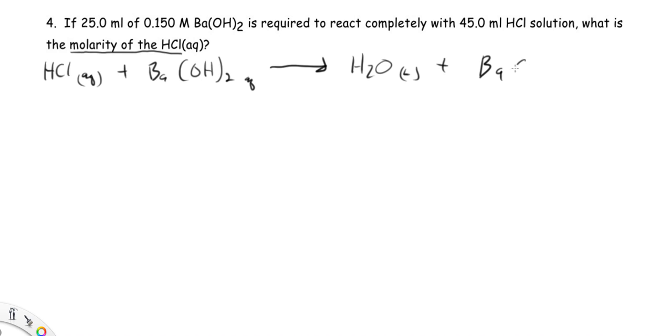Remember, barium is plus two, so we need two chlorides. It's soluble, so our mole ratio is going to be two hydrochloric acids to one barium hydroxide, and that's two water molecules.